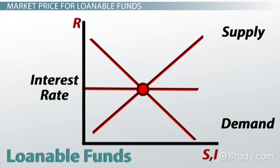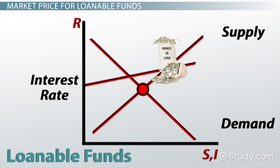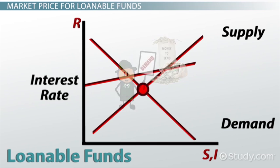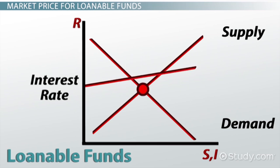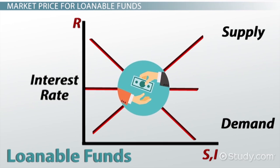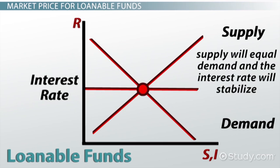On the other hand, if interest rates are above the equilibrium level, the supply of loanable funds will be higher than demand. This will cause lenders to lower interest rates to compete for borrowers, and more borrowers will enter the market as money becomes cheaper to borrow. Eventually, supply will equal demand, and the interest rate will stabilize.